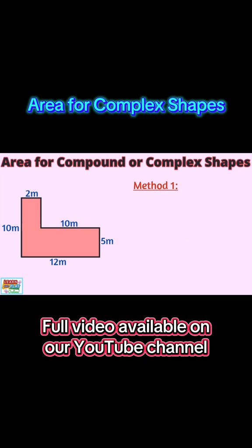We are going to show you two methods to find the areas of complex shapes. Using the first method, we are going to draw a dotted line like this, so now we have two rectangles. Let's call this rectangle A1 and this rectangle A2.